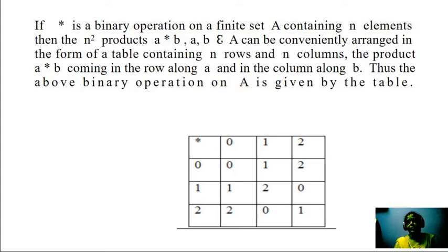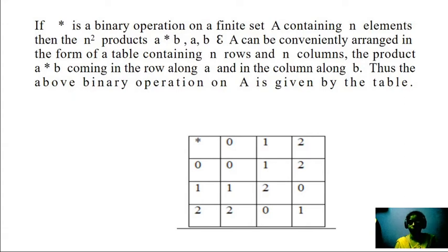We can easily identify the identity element and inverse element in the Cayley table. The identity element gives the element as it is after the operation. Here, 0 star 0 = 0, 0 star 1 = 1, 0 star 2 = 2 — so 0 is the identity element. For the inverse: 1 star 2 = 0 (which is the identity), so 2 is the inverse element of 1.